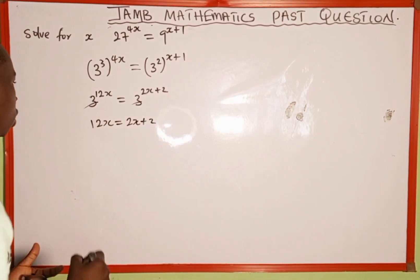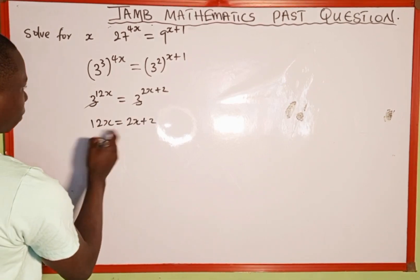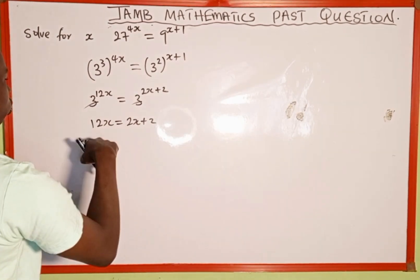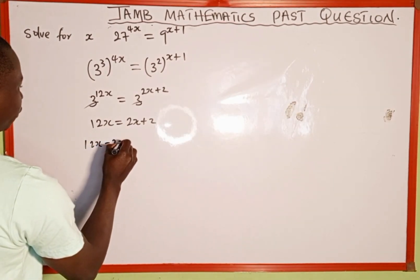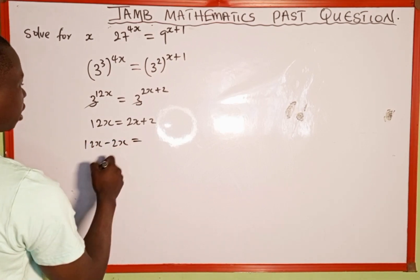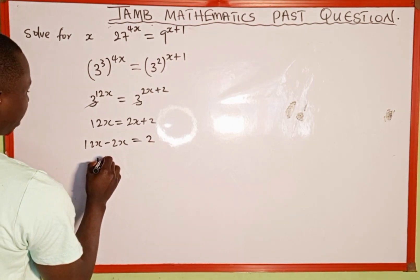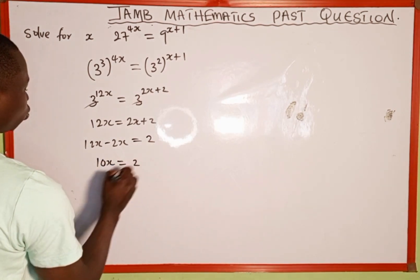Now we're going to collect the like terms. We have 12x. When this 2x crosses to the left-hand side it becomes negative 2x because of the equality sign, which equals 2. So 12x minus 2x gives us 10x, which equals 2.